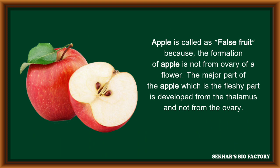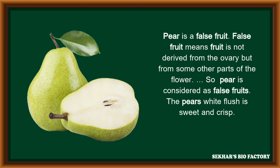The best example for false fruit is apple. In apple, after fertilization, the fertilized ovary is present at the center with seeds. But the tissue or fleshy part present around the fertilized ovary, which stores food material, is developed from the thalamus and is edible in nature. One more example is pear fruit, where the fruit is also developed from parts other than the ovary.